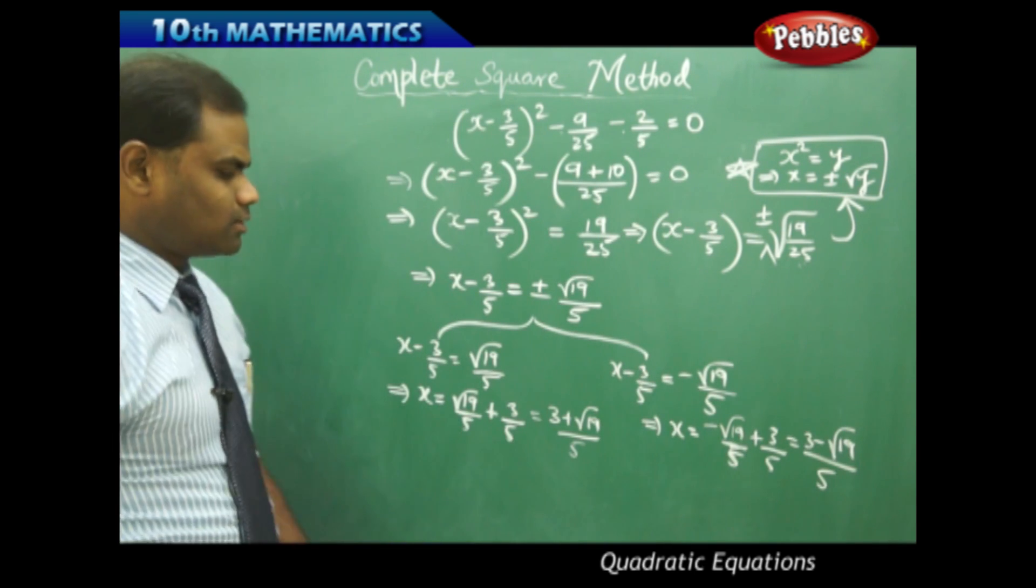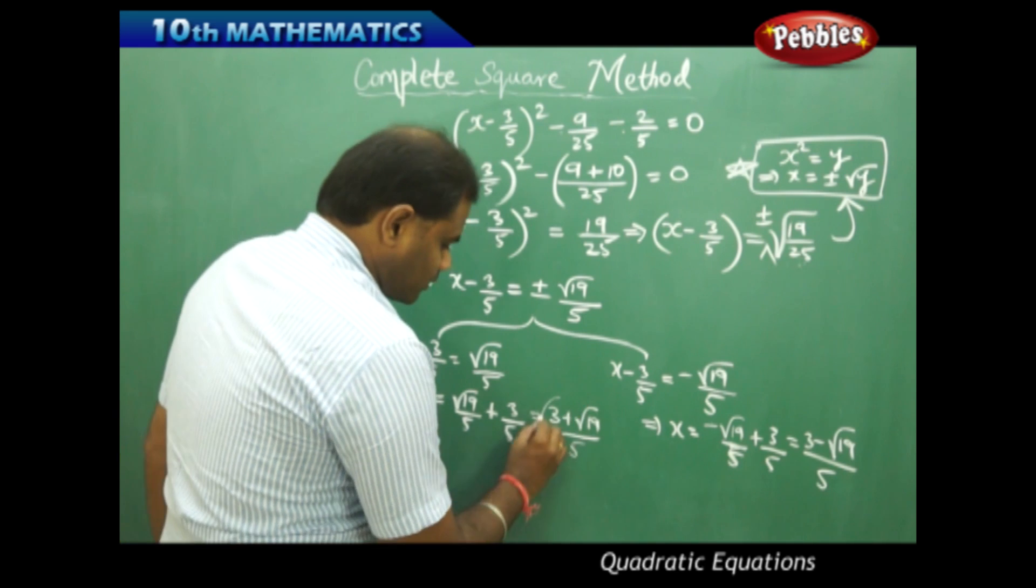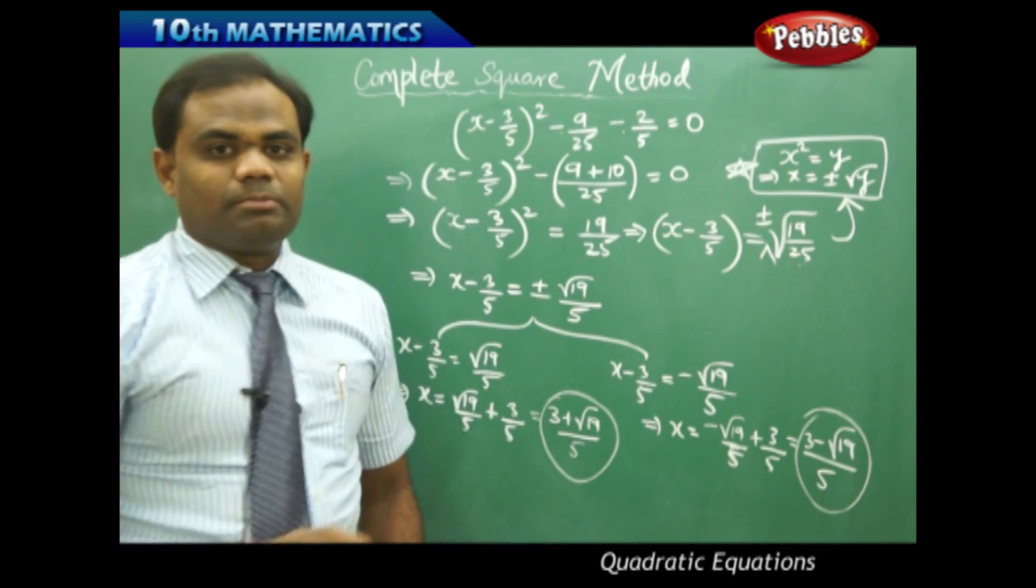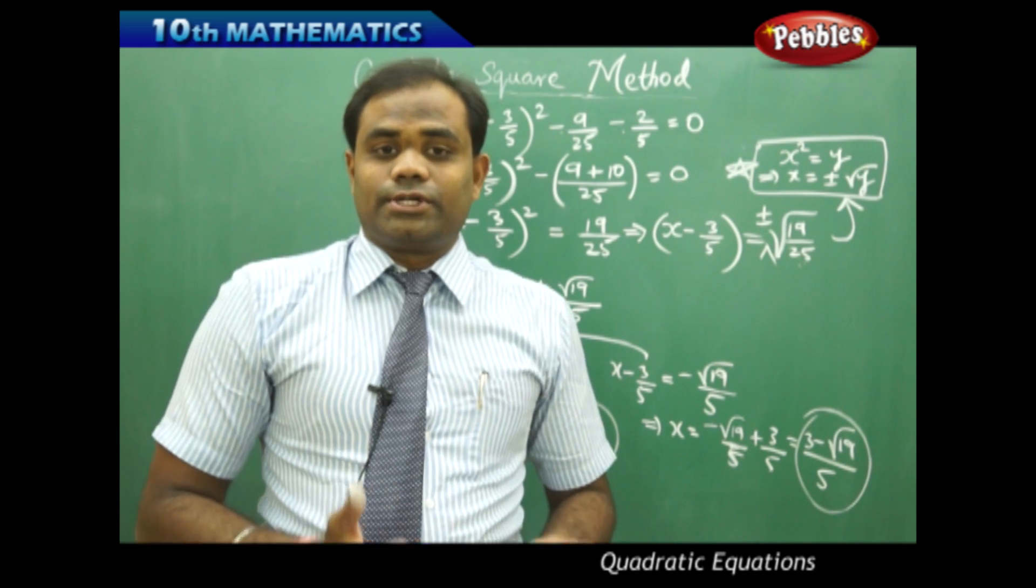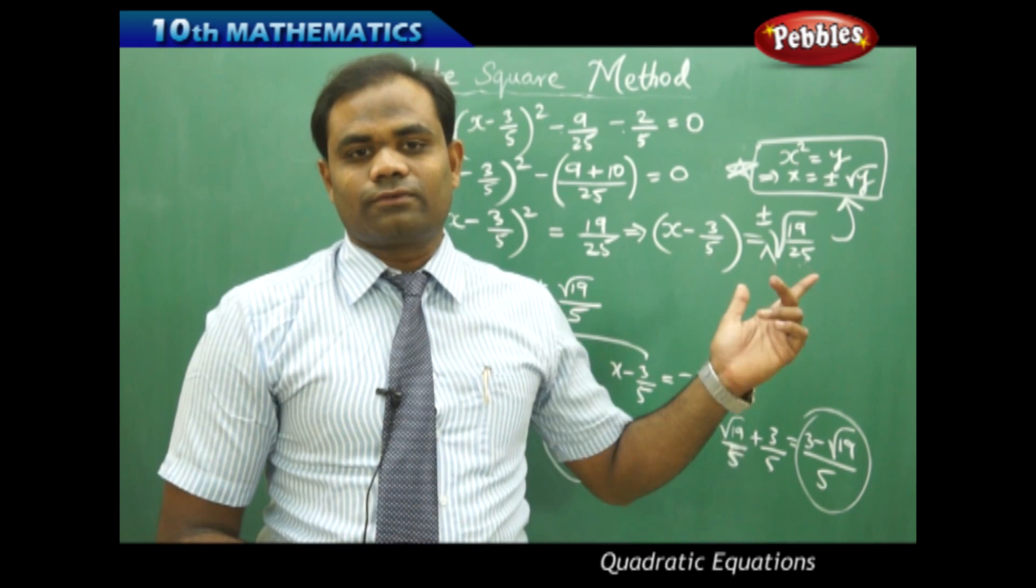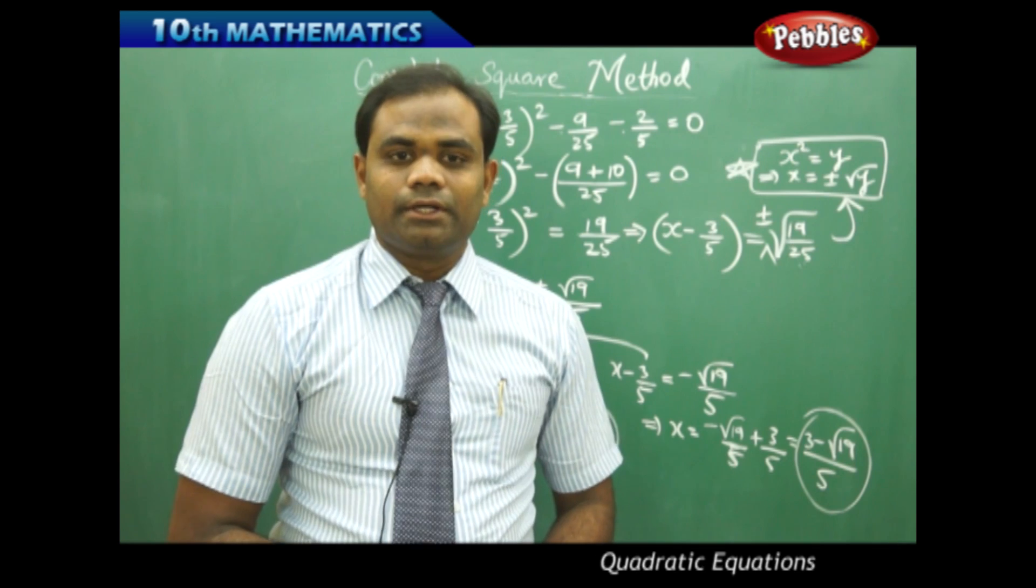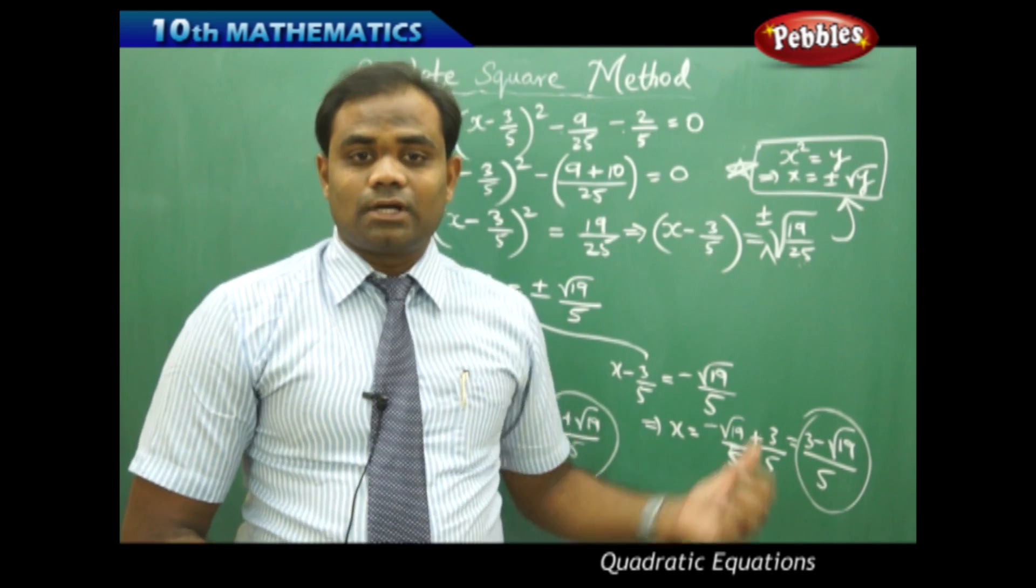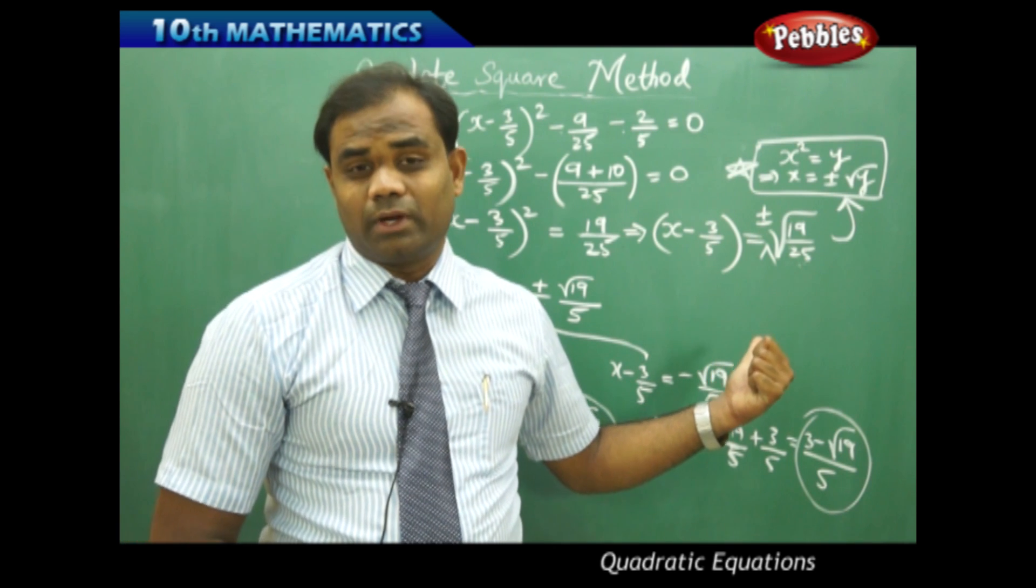Therefore I get two solutions for the given quadratic equation, these being the roots or the zeros or the solution of the given quadratic equation using complete square method. So this is how we do the complete square method.